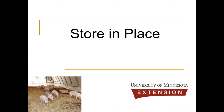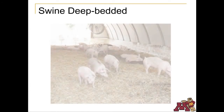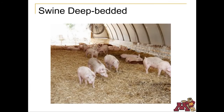Manure can also be stored either temporarily or long term where animals are housed. Swine, dairy, beef, and poultry farms can use this type of direct deposit system. Bedding is added to keep the animals dry. For swine, straw or corn stalks are used. Depending on temperature, humidity, and animal size, more bedding will be added as needed. When the barn's inhabitants are moved to another building or sent to market, the barns are cleaned.